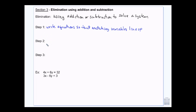Step two is we add or subtract. Here, first of all, when we finish step one, we check to see that one of the variables, so either the X or the Y, have matching or opposite coefficients.